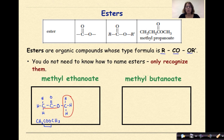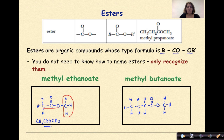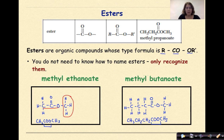Let's do another example: methyl butanoate. But means four carbons. Off the fourth carbon I put a double-bonded oxygen, then another oxygen, then a methyl group. Filling in bonds and hydrogens for the remaining carbons, the condensed structural formula is CH₃CH₂CH₂COOCH₃. Again, the way you recognize this as an ester is noticing that COO in the middle of the compound.